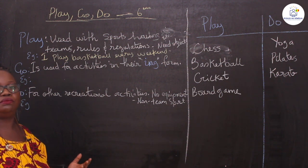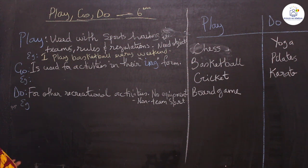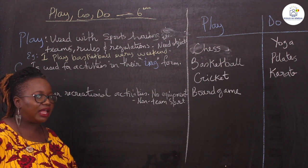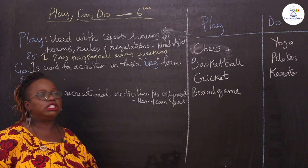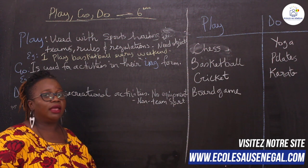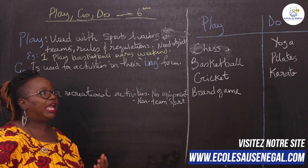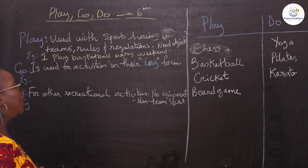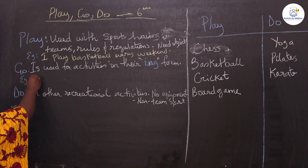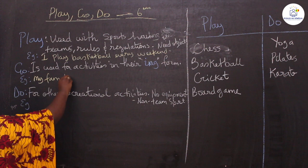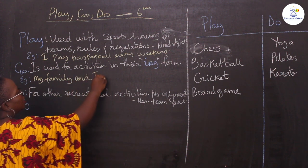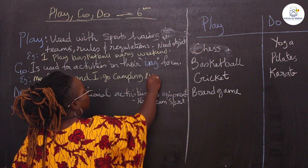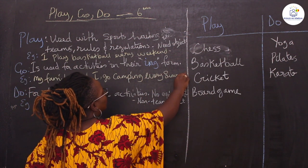The next one is 'go'. What would you use 'go' for? It's used for activities that have an -ing form. Every activity that has an -ing form is usually not 'play' — for example, you don't say 'I play swimming' or 'I play bowling'. You would say: I go bowling, I go camping, I go hiking. Everything that has the -ing form takes 'go'. For example: my family and I go camping every summer.